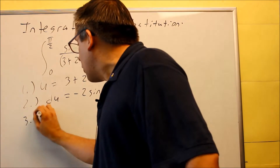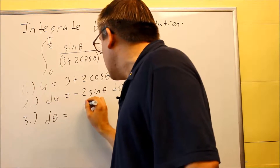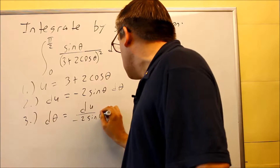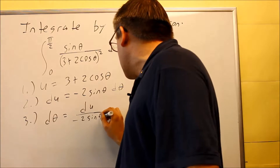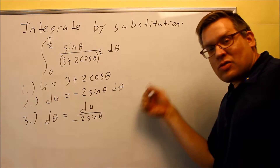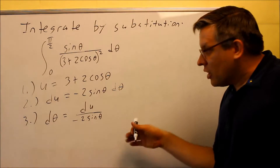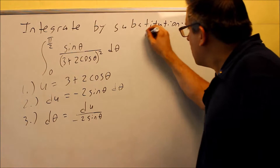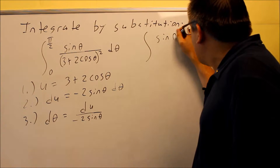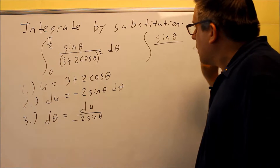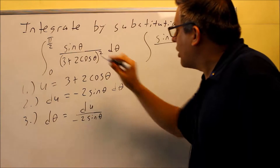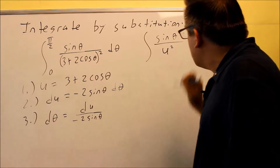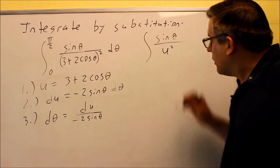For step number 3, you're going to solve for d theta, so that's du over negative 2 sine theta. In the same step, you're also going to plug it back into the original — you have sine theta there. And then down below, everything inside the parenthesis turns into a u, so you have u squared there.